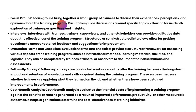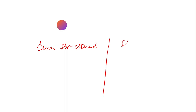Next is the interview method. Interviews with trainers, trainees, supervisors, and stakeholders can provide a lot of qualitative data about the effectiveness of the training program. Interviews can be structured or semi-structured — in semi-structured interviews, some questions are pre-set and can be modified as the interview progresses. This allows probing people in detail for feedback and suggestions for improvement.